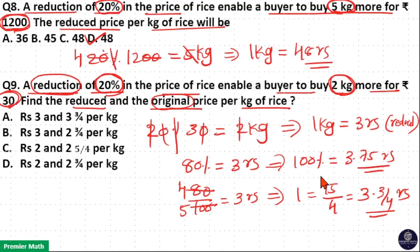That is, original price is equal to Rs. 3.75 and reduced price is equal to Rs. 3. So option A is your answer. You can also solve this question using the ratio method.